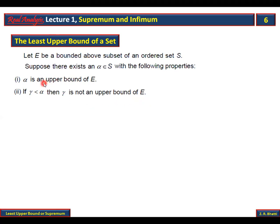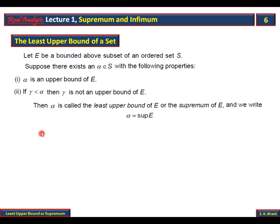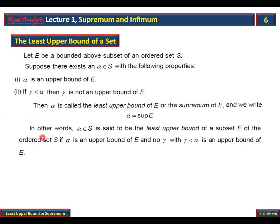Jaise maine kaha, woh upper bounds mein sabse choti upper bound hogi. Pehli condition to hai — use upper bound hona chahiye. Phir agar us se ek bhi chota number liya jaaye, to woh upper bound nahi honi chahiye. Us soorat mein alpha kya hogi? Least upper bound. Then alpha is also called the 'supremum' of E, denoted as alpha = sup(E). In other words, alpha belonging to S is the least upper bound of subset E of ordered set S, and no gamma less than alpha is an upper bound of E.